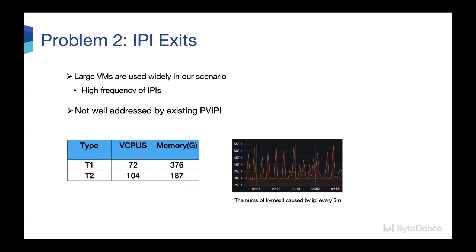Let's see the problems with API exits. API exits are also a big portion of overhead in our scenario, since large VMs are widely used. The statistics of the API VM exits are presented on the graph. You can see the API VM exits in our scenario can cause up to 550,000 VM exits every few minutes. Also, features of PV API are implemented in upstream, but they don't resolve our issues very well.